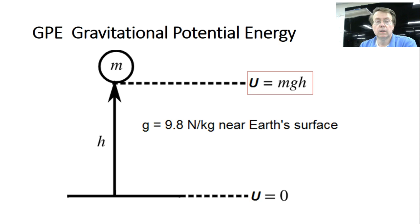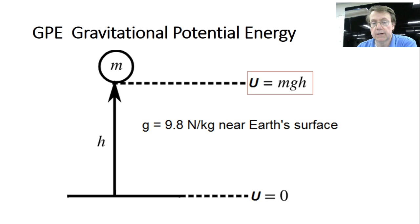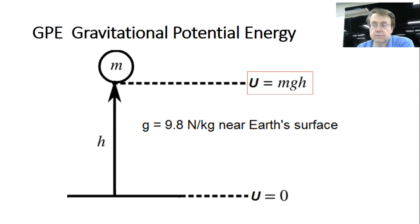Gravitational potential energy requires picking a reference height for zero. If we pick the Earth's surface as zero, any height above is positive gravitational PE and below is negative. The equation is PE = mgh, where m is mass in kilograms, g is 9.8 N/kg for Earth, and h is height in meters, giving energy in joules.